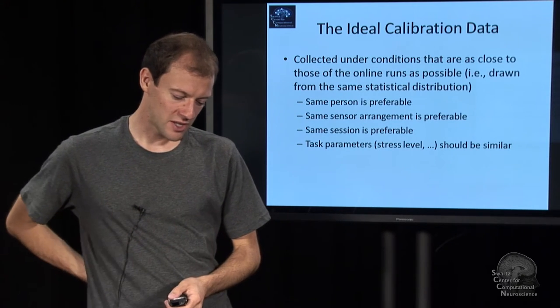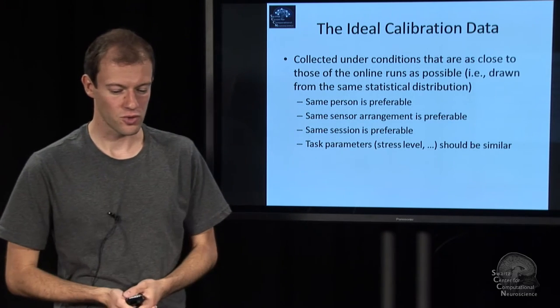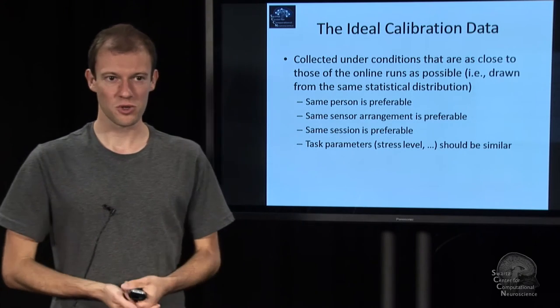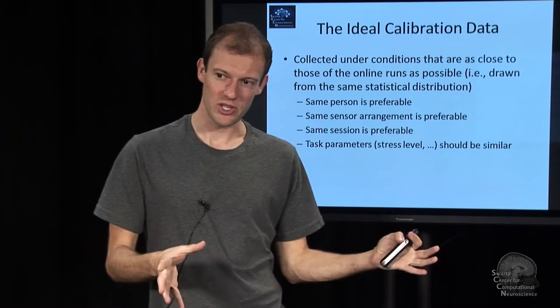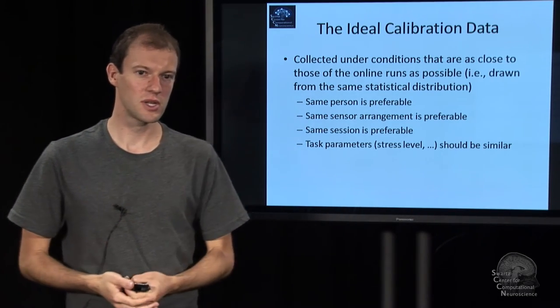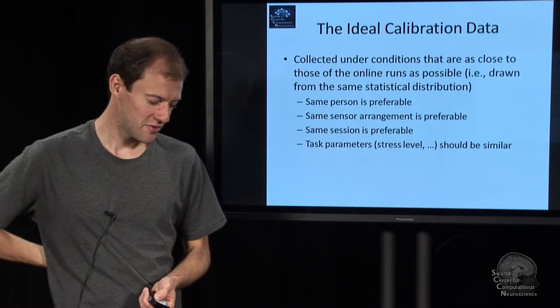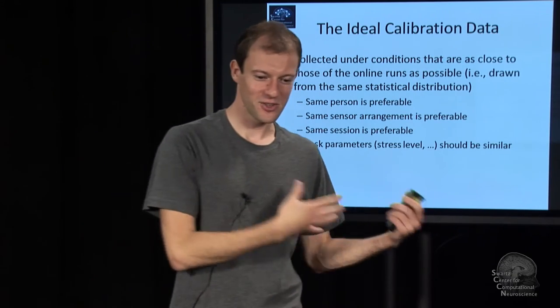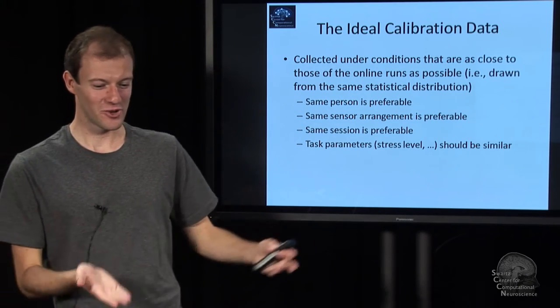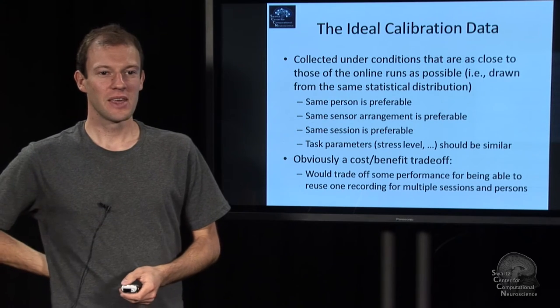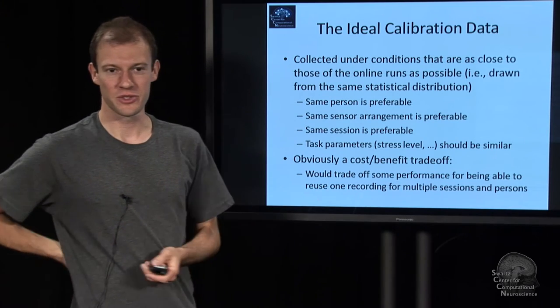These things are also called trials in psychology. If you can somehow control the conditions under which this is recorded, you will want to make sure that they are as close as possible to the actual conditions under which you want to run your brain computer interface. Same person, same sensor arrangement. Ideally, it's in the same session, so you record and calibrate before you actually use it, but usually that's expensive to do, takes a lot of time. Same task parameters, so for example, if the actual online use is exciting and interesting, your calibration run shouldn't be boring as hell, because then you have a systematic difference between the two things. So there is a trade-off, because in many cases you cannot ensure that you have all these things or it's very costly.